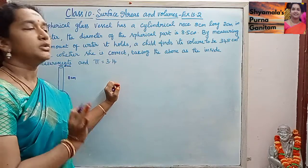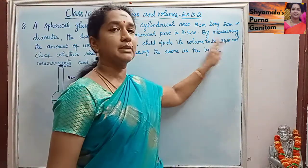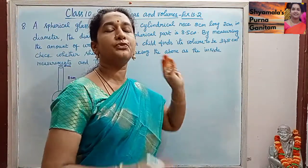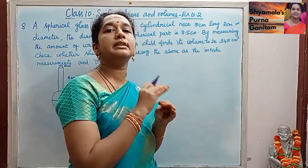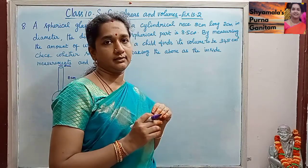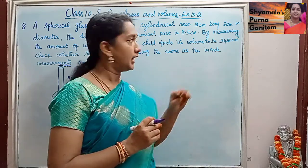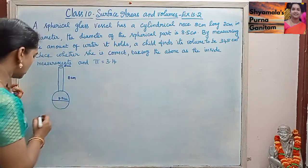Very simple. We are asked to check whether the sum of the volume of the sphere and the cylinder is 345. So we will check that.